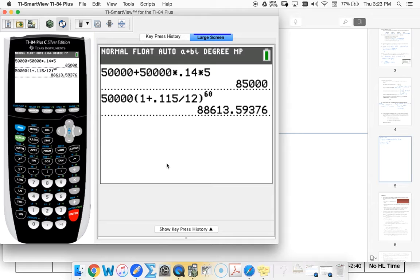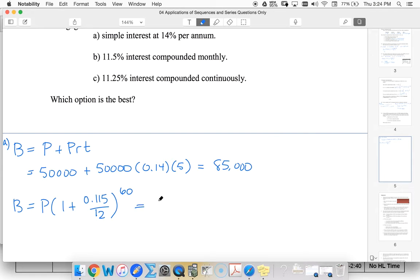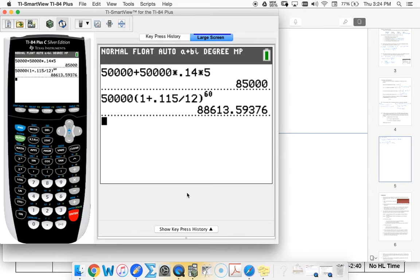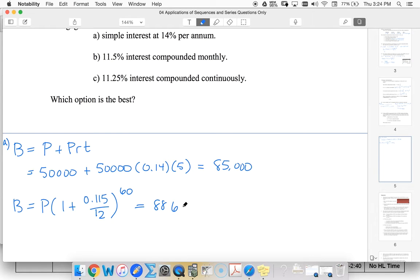That's a little bit more: $88,614 they would have to give them. Obviously we don't want to go with choice B.